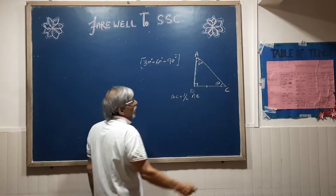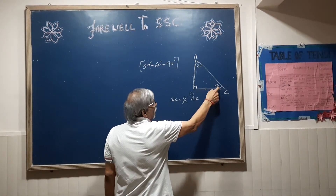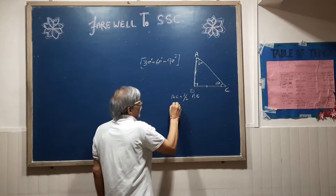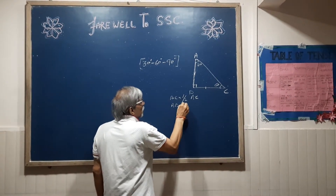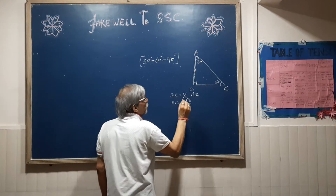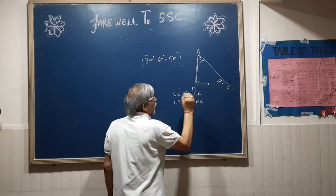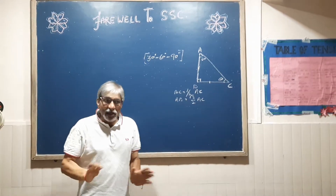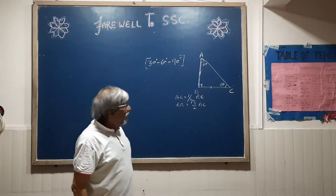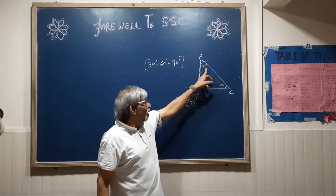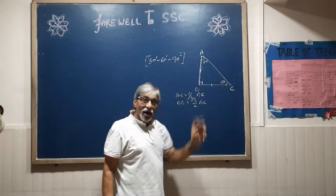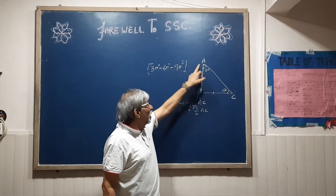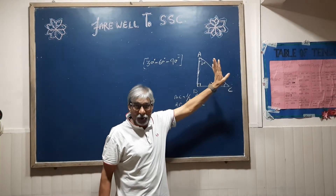And the side opposite to 60 degrees — AB is equal to (√3/2) times the hypotenuse AC. So according to the 30-60-90 degree triangle: side opposite to 30 degrees is half of the hypotenuse, and side opposite to 60 degrees is (√3/2) of the hypotenuse.